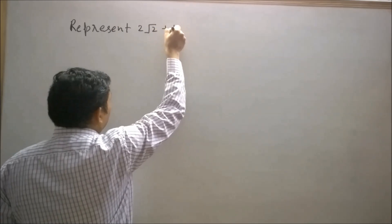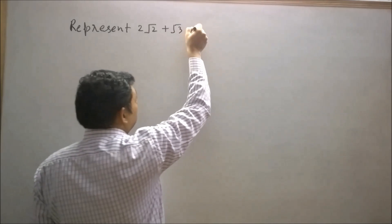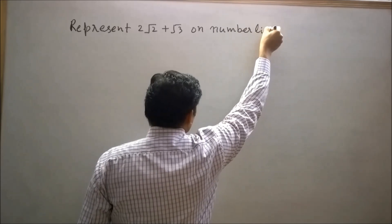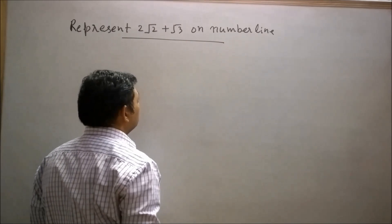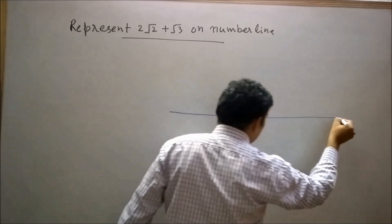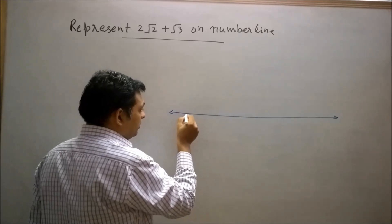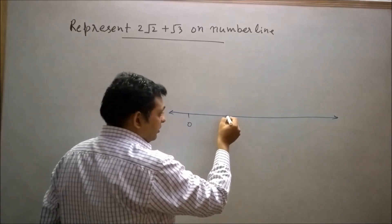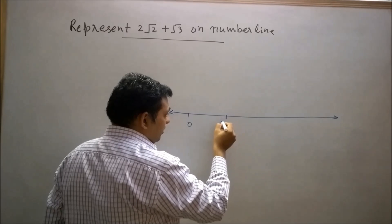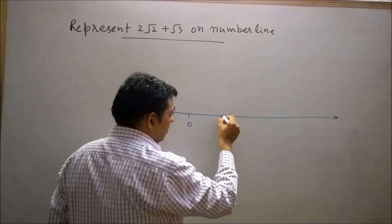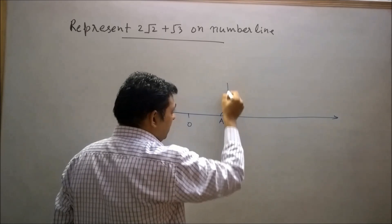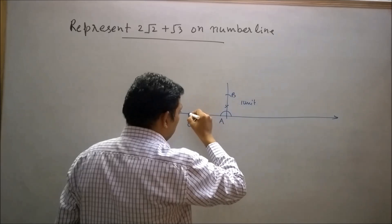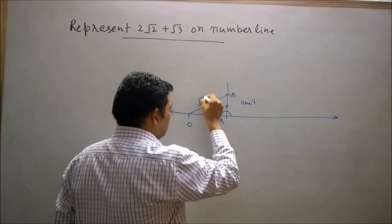Represent 2√2 plus √3 on the number line. First of all, I will draw a number line. Let's say this is our initial point O. Now move 1 unit distance to the right side of O — let's say this is 1 unit distance and mark this point as A. Now draw a perpendicular on OA as AB, and AB is also equal to 1 unit distance. Now join O to B; then OB represents √2.